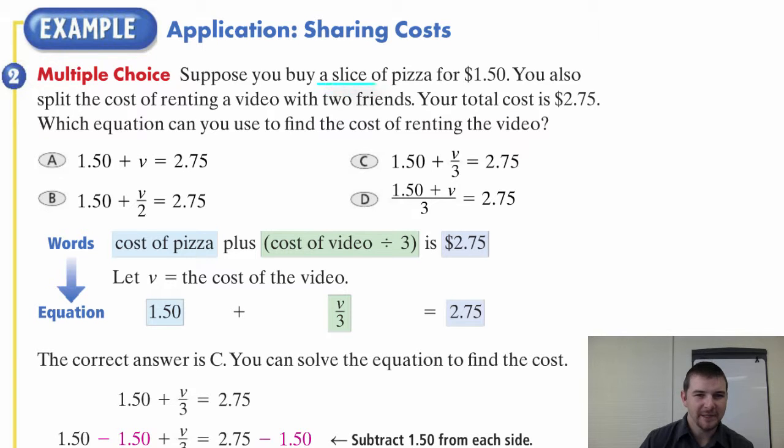Suppose you buy a slice of pizza for $1.50. You also split the cost of renting a video with two friends. Your total cost is $2.75. Which equation can you use to find the cost of renting the video?